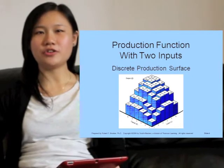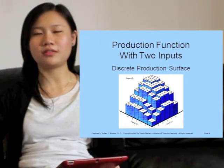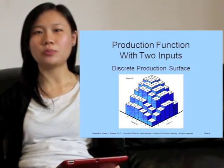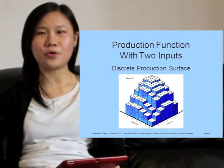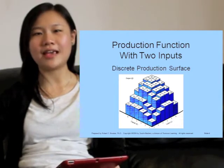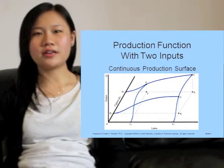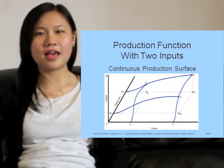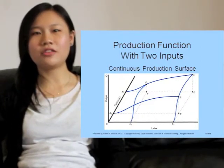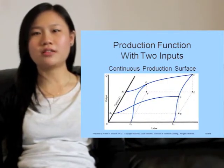This three-dimensional figure shows the production relationships from the table. The height of the bar refers to the maximum output that can be produced with each combination of labor and capital shown on the axis. The horizontal and inclined axes measure the labor and capital inputs, while the height of the surface gives the maximum level of output resulting from each input combination, all assumed to be continuously divisible.